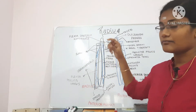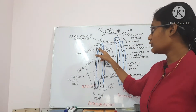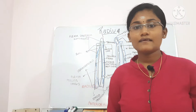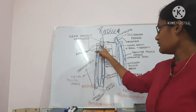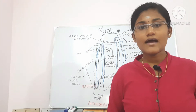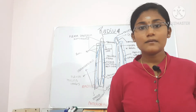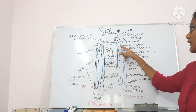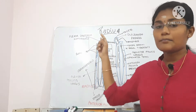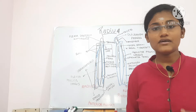An oblique cord lies below the radial tuberosity on the medial side. Now let's talk about the radial tuberosity. The radial tuberosity is an elevation here and it has a rough posterior part and a smooth anterior part. The rough posterior part gives attachment to the biceps brachii muscle and its tendon.